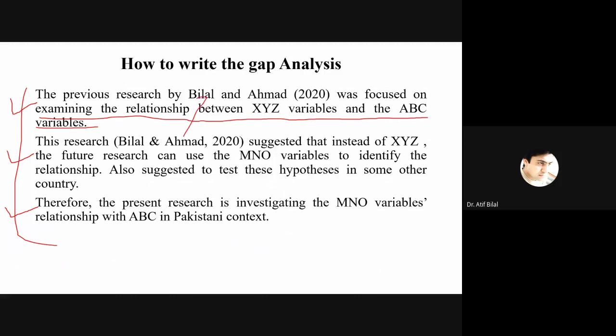Which research? This research. The research suggested that instead of X, Y, Z, the future research can use M and O variables to identify the relationship. Also suggested to test these in some other country or in some other industry. Therefore, the present research is investigating the M and O variable relationship with ABC in Pakistani context. This is how you can write it.